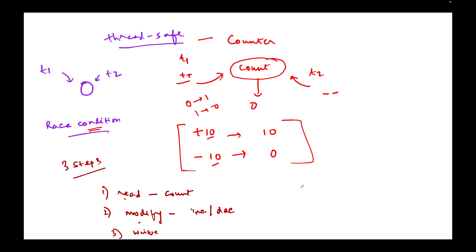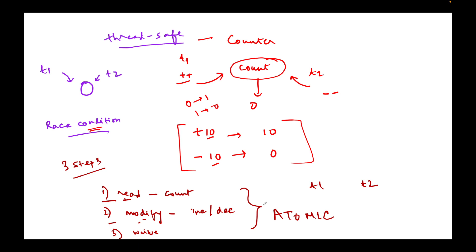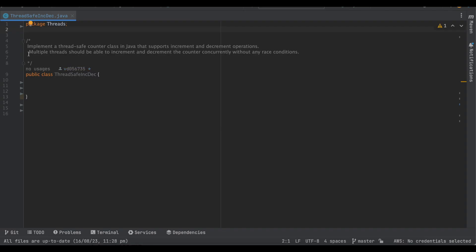When there are large numbers of threads or threads running many times, there is interference in these three operations. These three operations should ideally be atomic — meaning all or none: either you perform all three operations together at once, or you don't perform them at all. If a thread reads a variable, goes to sleep, then comes back to modify and write, that results in inconsistent data. We are going to see the problem in code and then introduce atomicity.